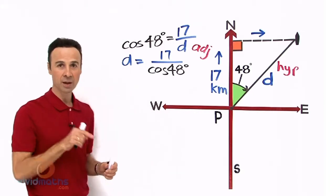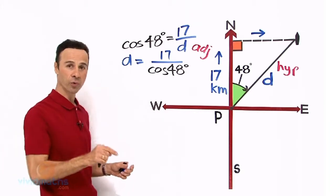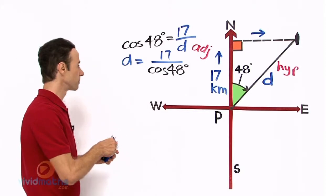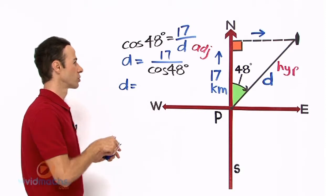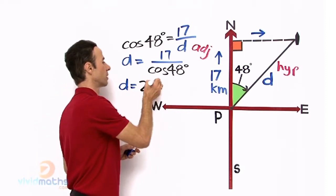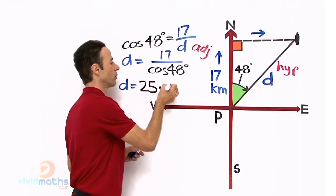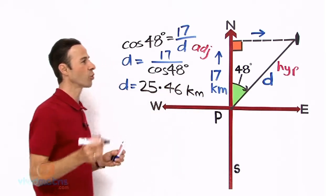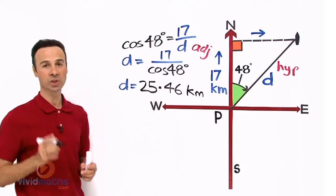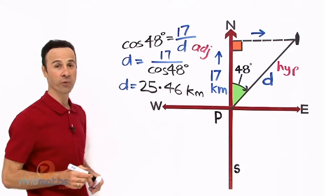Okay, on our calculator, let's go 17 divided by cos 48. The answer will be D equals 25.46 kilometers. Now you will notice in the question it states to the nearest kilometer, so because it is a .4,